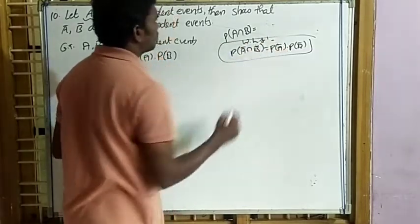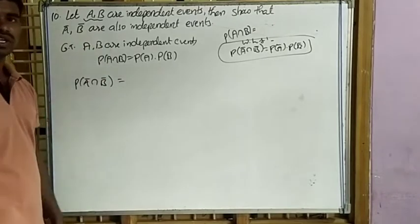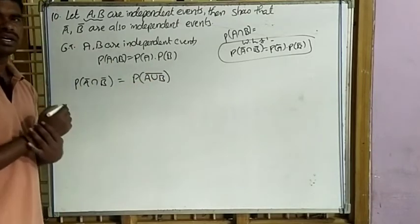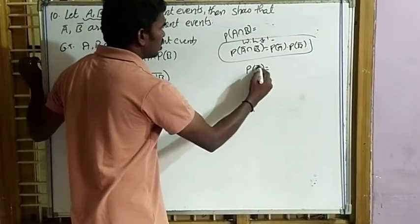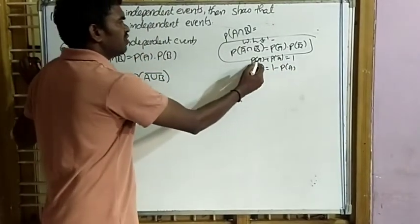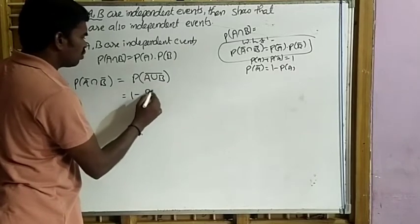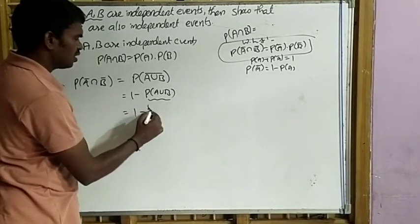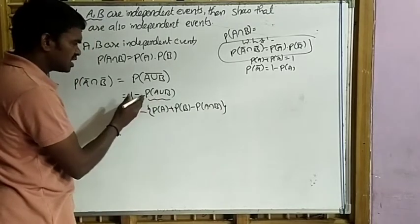Take P(Ā∩B̄). Using De Morgan's law from sets, Ā∩B̄ = (A∪B)̄. So P(Ā∩B̄) = P((A∪B)̄) = 1 − P(A∪B). Now P(A∪B) = P(A) + P(B) − P(A∩B). So P(Ā∩B̄) = 1 − [P(A) + P(B) − P(A∩B)].